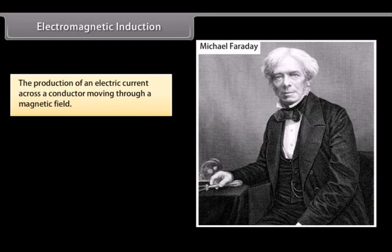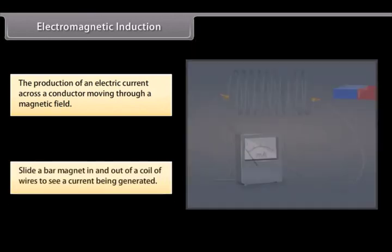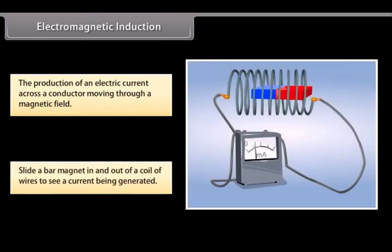Michael Faraday was a British scientist, chemist, physicist, and philosopher who discovered the magnetic field, electromagnetic induction, diamagnetism, and electrolysis. His experiments included the discovery of generating currents by moving a magnet. Let us try sliding a bar magnet in and out of a coil of wires. You see that the wires generate a current. This is known as electromagnetic induction.